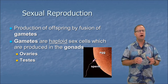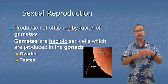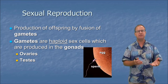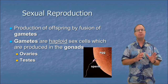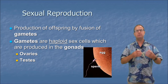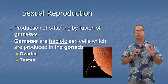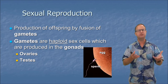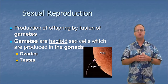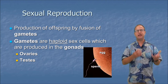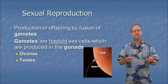Before we start off we need to talk about sexual reproduction. Sexual reproduction is defined as the production of offspring by fusion of gametes — the egg and the sperm. These gametes are haploid sex cells, meaning they have half the number of chromosomes of a normal human body cell: 46 total versus 23 in a gamete. Gametes are made in the gonads — the ovaries in females and the testes in males.